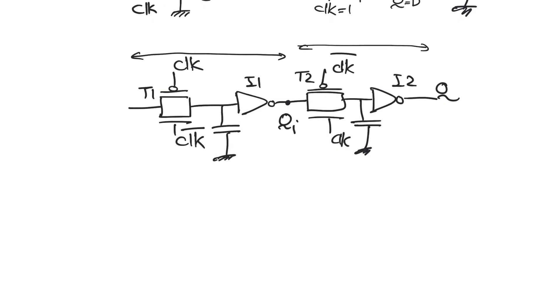So basically what's happening here is that when clock is equal to zero, T1 is on allowing QI to take the value of D bar, and when clock is equal to one, T1 will be off separating D from Q but allowing the last value of QI we saw to be passed to Q through transmission gate T2.